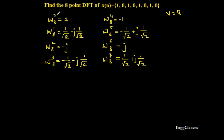W8 to the power 0 equals 1. W8 to the power 1 equals 1/√2 minus j·1/√2. W8 to the power 2 equals minus j. W8 to the power 3 equals minus 1/√2 minus j·1/√2. Similarly, W8 to the power 4, 5, 6, and 7 take the negative values of these.